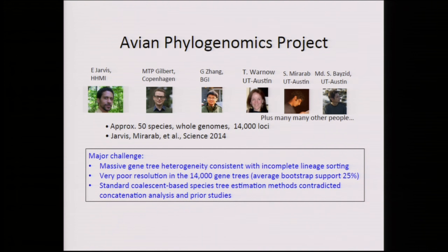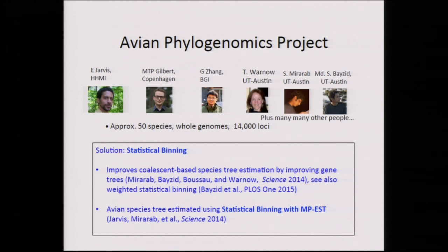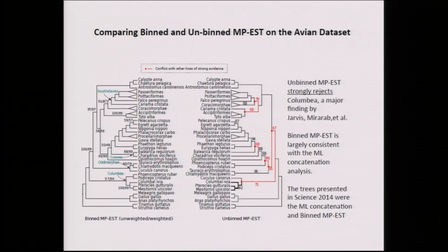Our solution was statistical binning, published in the major Science issue with eight papers on birds. Statistical binning is a way of getting better gene trees — if you can get better gene trees, you can get a better species tree. We used statistical binning to get better gene trees, then an MP-EST analysis of those newly estimated gene trees to get a new coalescent-based species tree. On the left is the tree with binning, on the right without. Everything in red contradicts prior studies. With binning, we got something matching our concatenation analysis; without binning, we got something that contradicted it.